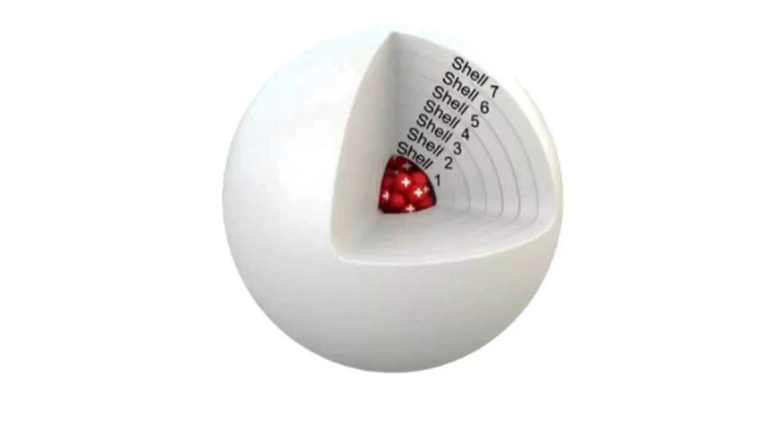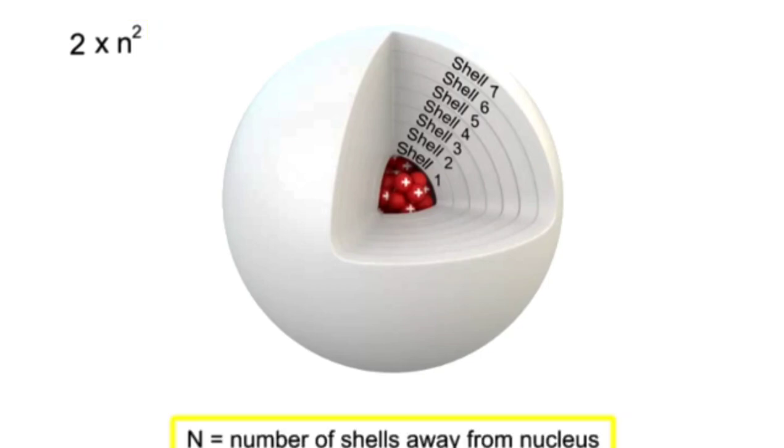The exact number of possible electrons per shell is defined by a rule of quantum mechanics stating that each orbit is filled when its electron count equals 2 times n squared, or 2n², where n is the number of shells away from the nucleus, also known as the principal quantum number.